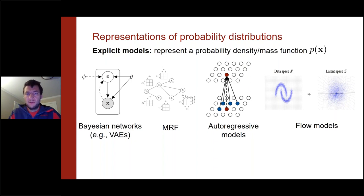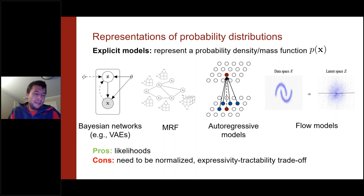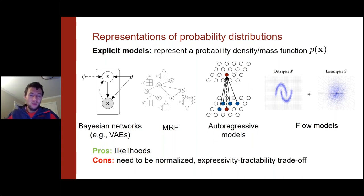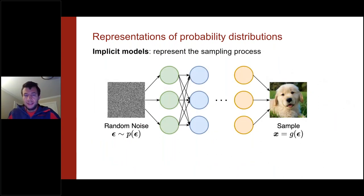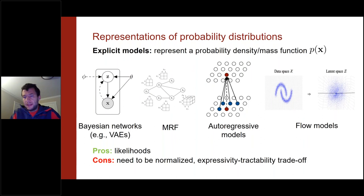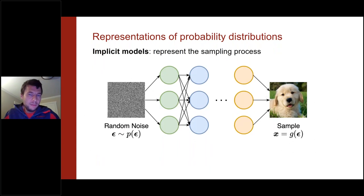These architectures allow you to evaluate the normalization constant in closed form. The key challenge is that normalization imposes constraints on the neural network, and there is always a trade-off between how flexible the functional family is and the need to evaluate the partition function. The alternative approach is to avoid representing the probability distribution altogether — instead representing directly the procedure used to generate new data. This is the approach taken by implicit models like generative adversarial networks.